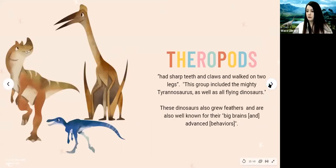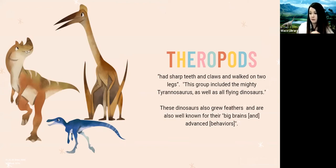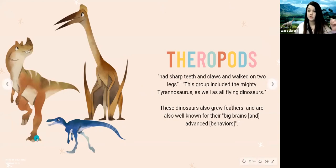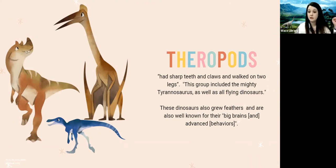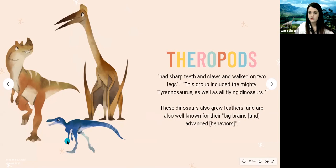The Theropods are the first category of dinosaurs. They had sharp teeth and claws and they walked on two legs. This group included the mighty Tyrannosaurus as well as all the flying dinosaurs, which are in a subgroup called pterosaurs. These dinosaurs grew feathers and were well known for their really big brains and their advanced behaviors.